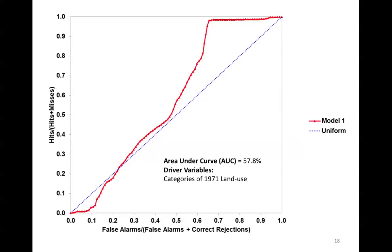For those of you familiar with the ROC, you are probably also familiar with the area under the curve metric. This is a widely used metric to evaluate model performance. The ROC also shows the uniform line, which represents the expected curve of an index variable that has its values assigned at random. Thus, the user can compare their index map to a randomly created one. We see that our index performs worse than random at predicting change in areas close to the origin, and better than random at predicting persistence in areas closer to the upper right corner of the chart.